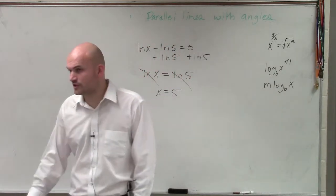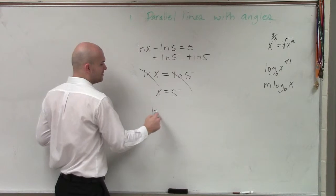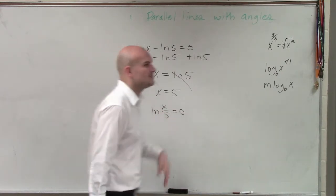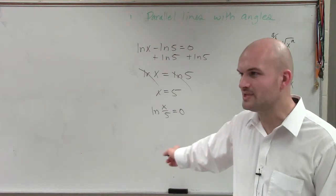The other way you could also do that, though, just to make sure, you could also rewrite this as a division of ln of x over 5 equals 0. And the reason why I just want to present it to you guys both ways is because how would you solve something from here?